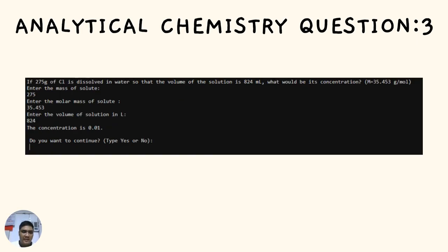Next question: If 275 grams of chlorine is dissolved in water so that the volume of the solution is 824 mL, what would be its concentration? The molar mass of Cl is 35.453 grams per mol. Enter the mass of solute as 275, the molar mass as 35.453, and the volume of solution as 824 liters. The concentration is 0.01.